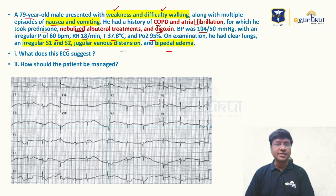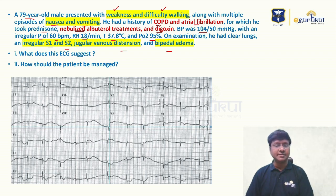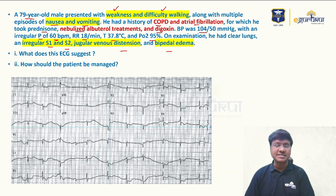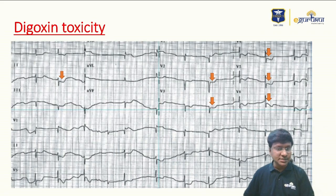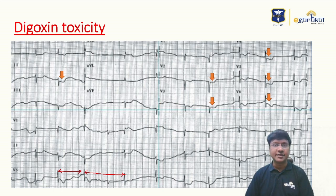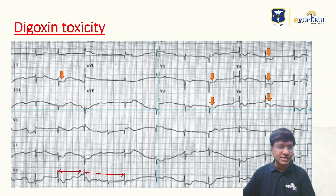The main presentation is weakness, difficulty in walking, nausea, vomiting, bradycardia, and irregular rhythm. Looking at the ECG, the first abnormality is a variable RR interval, indicating irregular rhythm. The very important abnormality is ST segment depression.